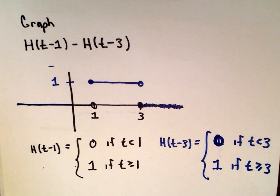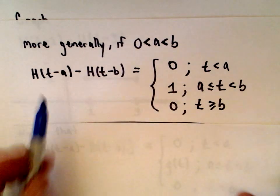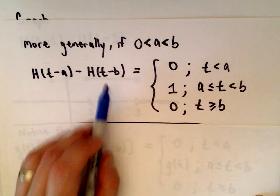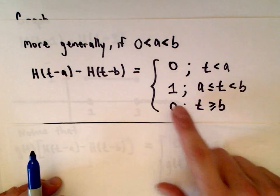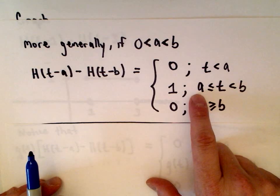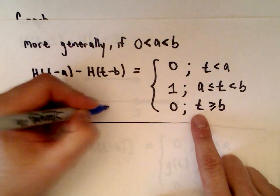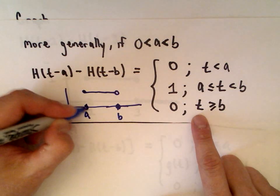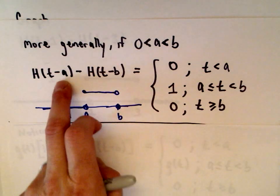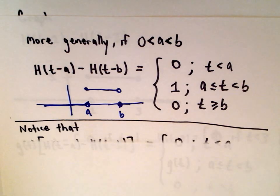More generally, if we have a function of the form h of t minus a minus h of t minus b, assuming 0 is less than a which is less than b, it's going to kick on at time t equals a and then turn back off at time t equals b. So it's kind of telling you the starting and stopping times for the current to be on. You don't have to think about it in terms of electricity — that just helps me relate it to something.